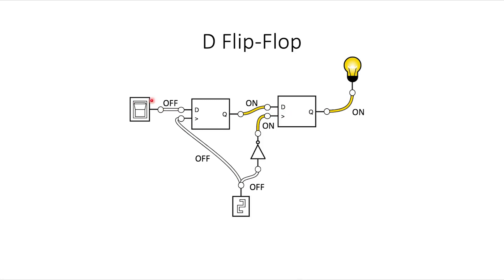Now I can do the opposite. I turn the input switch off and run the clock again. The clock turns on, a zero is written into the first latch, so a zero comes as that output. But the final output doesn't change because the clock is still on. Once the clock turns off, the second latch turns on and I'm allowed to feed this input through to the output.